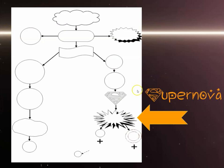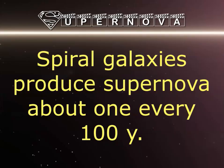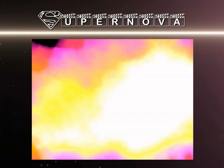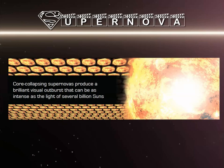This massive explosion that occurs is a supernova. There are very different types — type one, type two — but I've limited it to one massive supernova here. Spiral galaxies produce a supernova about once every hundred years, which in a human lifespan seems rare, but over billions of years it's fairly common astronomically. Core-collapsing supernovas produce a brilliant visual outburst that can be as intense as the light of several billion suns.